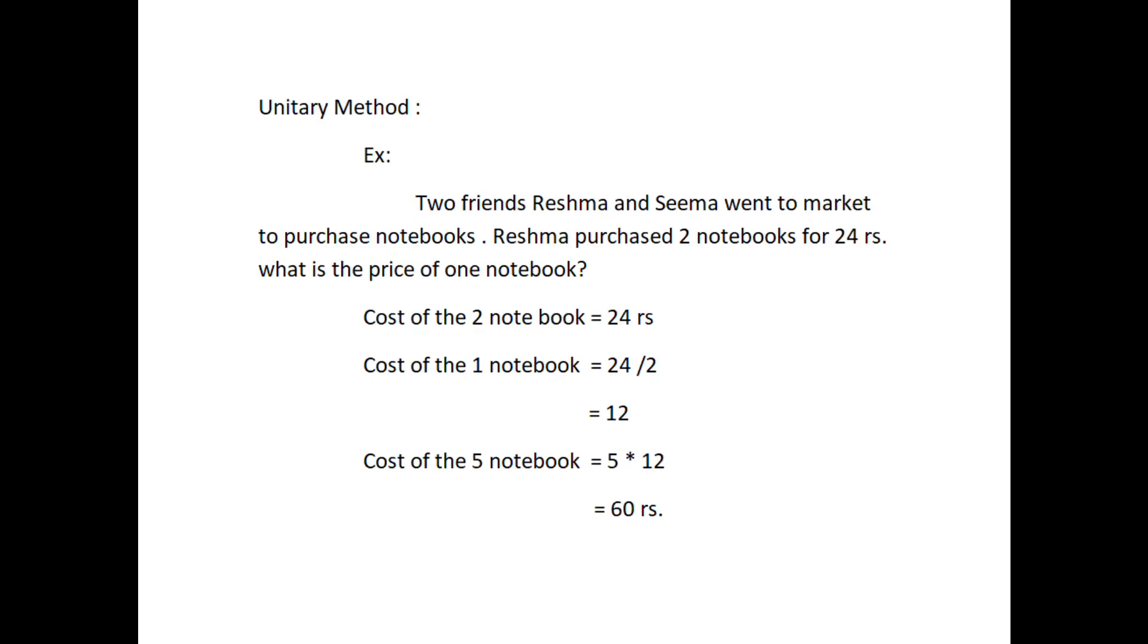Unitary method means the method in which first we find the value of one unit and then the value of required number of units. For example, two friends, Reshma and Seema went to market to purchase notebooks. Reshma purchased two notebooks for Rs.24. What is the price of one notebook? Cost of two notebooks equals 24. Cost of one notebook equals 24 divided by 2 which equals 12. Therefore, cost of five notebooks equals 5 into 12 which equals 60 rupees.